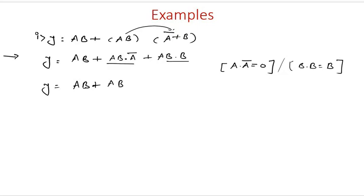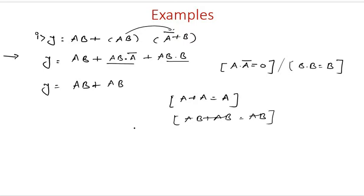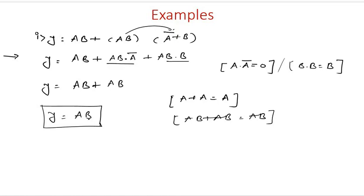What is left is ab plus ab. Now we apply the rule: a plus a equals a. Similarly, ab plus ab gives us ab. So the final answer is y equals a into b. This is the reduced expression. We first solved the bracket terms, then applied the rules a·ā and b·b, and simplified to get y equals a into b.